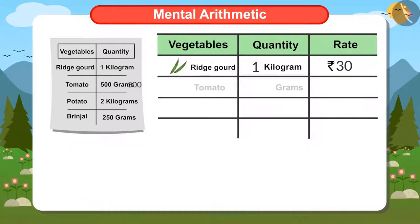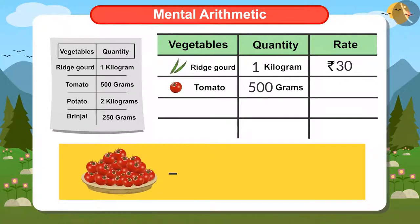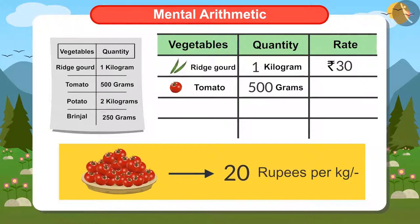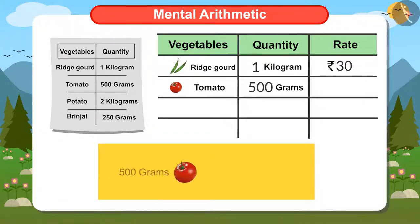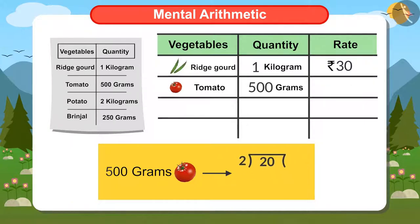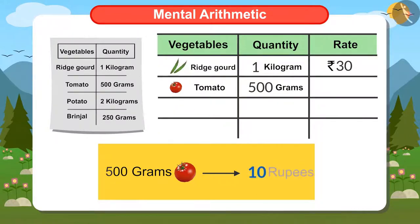I have also bought half a kilo of tomatoes and the price of tomatoes is 20 rupees a kilo. This means that to know the cost of half a kg of tomatoes, I have to divide 20 by 2. Two tens are 20, which means 10 rupees is the cost of half a kg of tomatoes.